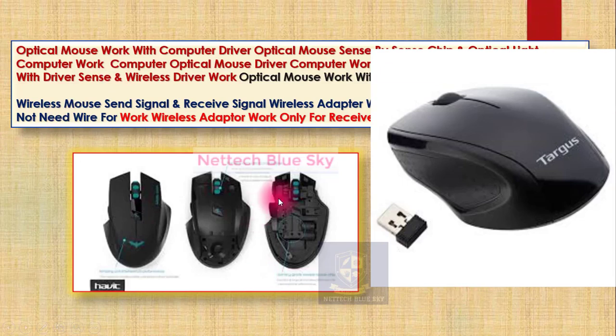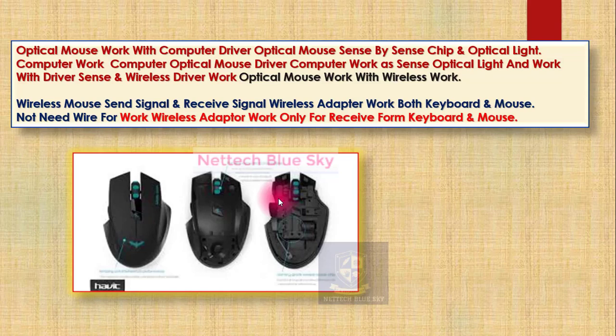This works with the computer driver and the mouse driver system. The mouse driver is already defined — it is one type of program system created by a computer programmer and engineer. The programming engineer defines how the driver works and how the controlling system works. The wireless mouse sends signals, and the wireless adapter receives signals — some adapters work for both keyboard and mouse. The wireless mouse only sends signals, it does not receive. Some wireless keyboard systems use a built-in antenna for two-way wireless communication.